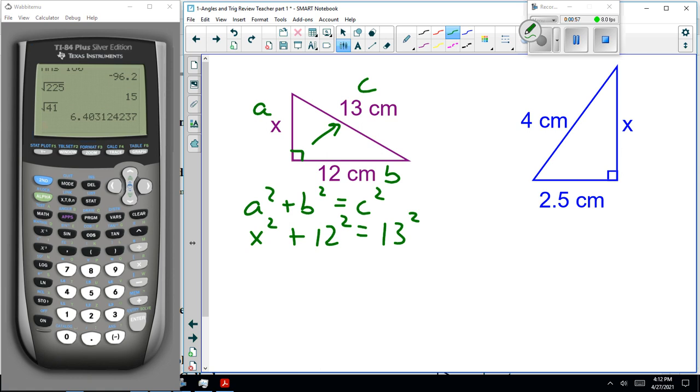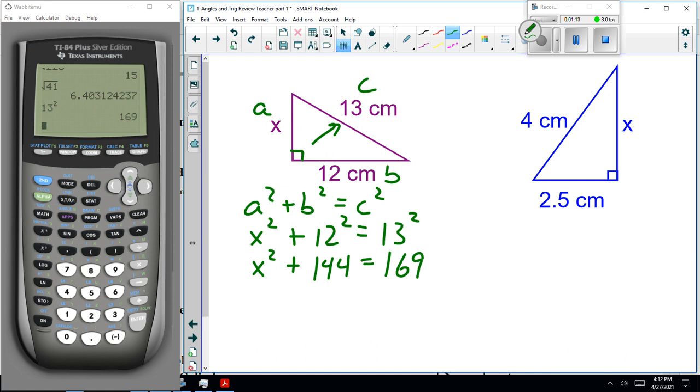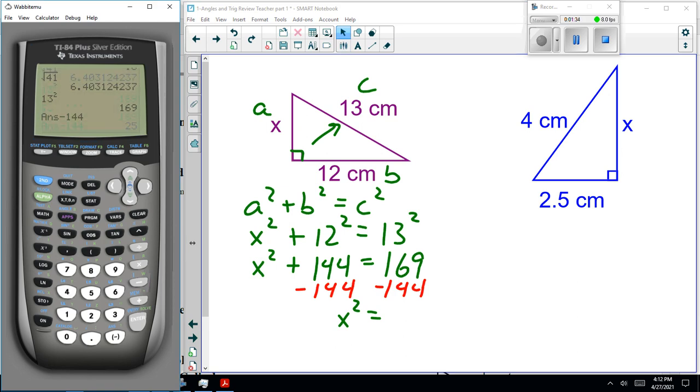Now, is that a big deal? Not really, but if you're not paying attention... X squared plus 144 and 13 squared is 169. Notice what's the thing about this? It's X squared plus 144. How do we get it? Plus 144? We subtract 144 from both sides. So, we're going to have X squared is 169 minus 144, 25.